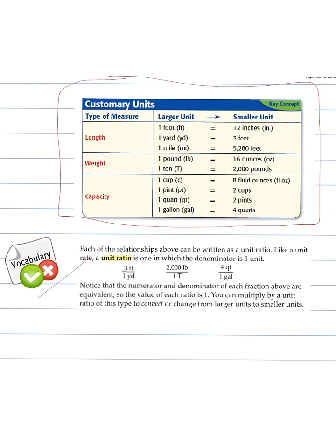There's a vocab word here that we should make sure to write down: unit ratio. Each of the relationships above can be written as a unit ratio. Like a unit rate, like we talked about with the grocery ads, unit rate denominator is one. A unit ratio is one in which the denominator is one unit. Just like unit rate we added numerator over one, this time again it's over one.